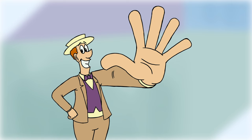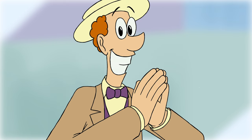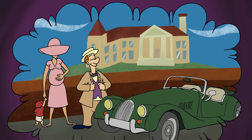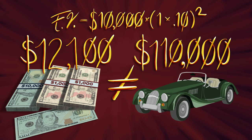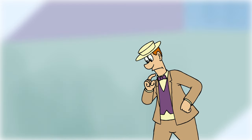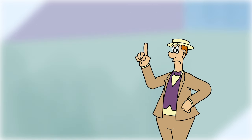Sure, Timmy, we can see how much you'll have in 5 years. Let's connect future value and present value across 5 years and watch the period increase from 2 to 5. After 5 years, you'll have $16,105.10. Sorry, Timmy, you have to wait a little longer.